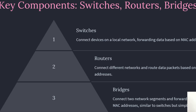The key components in switching are: switches, which connect devices in a local area network and forward data based on MAC addresses; routers, which connect different networks and provide paths for data packets based on IP addresses; and bridges, which connect two network segments and forward data based on MAC addresses, functioning similarly to switches.